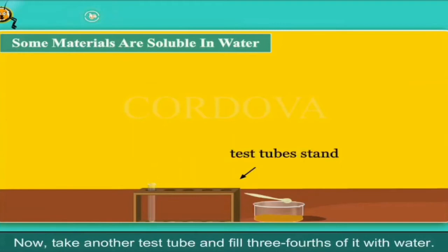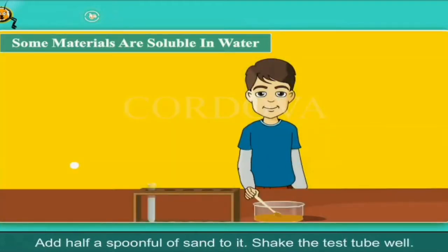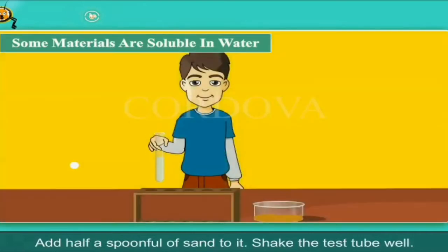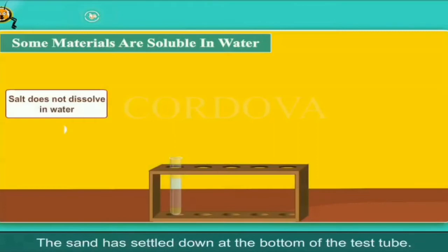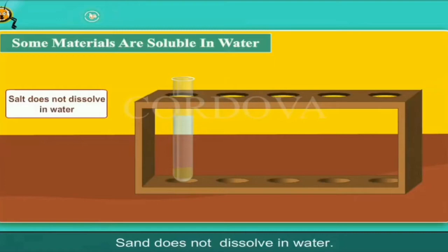Now, take another test tube and fill three-fourths of it with water. Add half a spoonful of sand to it. Shake the test tube well. Can you see the sand now? The sand has settled down at the bottom of the test tube — sand does not dissolve in water. So, we say that sand is insoluble in water.